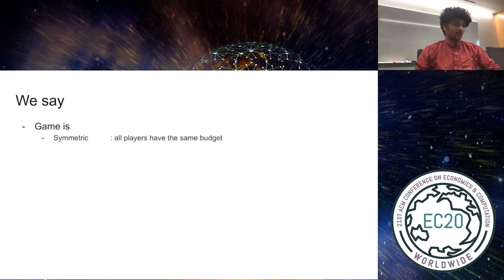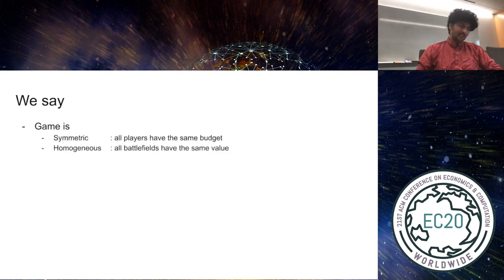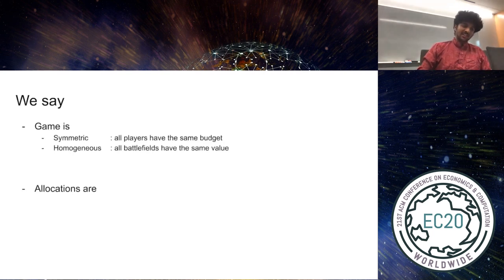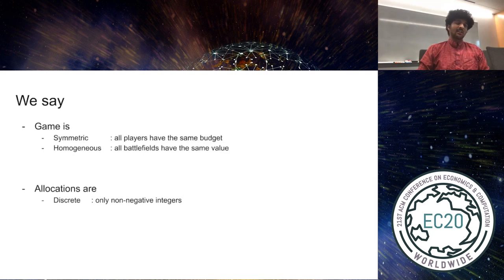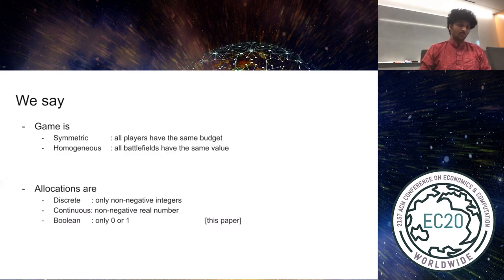We say that the game is symmetric if all players have the same budget, and homogenous if all battlefields have the same value. Sometimes there's a restriction on the allocations. If the budget can only be split into non-negative integers, like individual soldiers being split amongst battlefields, we call the game discrete. If the budget can be split into arbitrary non-negative real numbers, we say the game is continuous. And finally, in this paper, we introduce a novel Boolean case, which models applications where each battlefield is either contended for or not contended for by a given commander, so the allocations are 0-1.